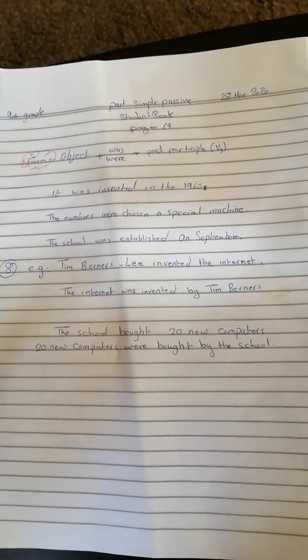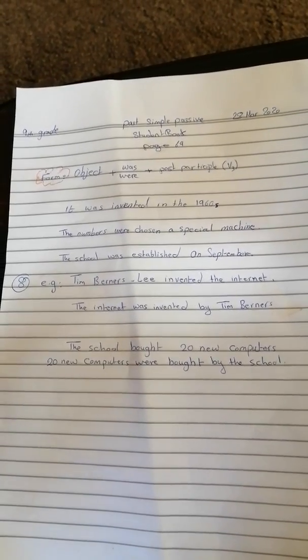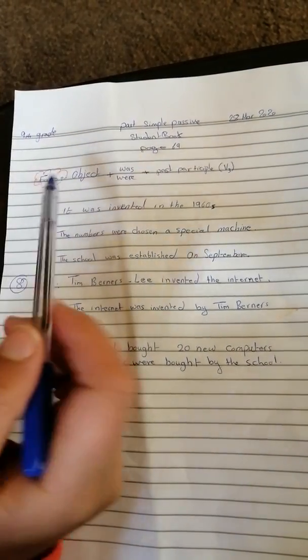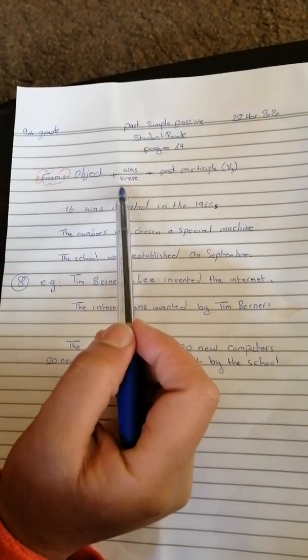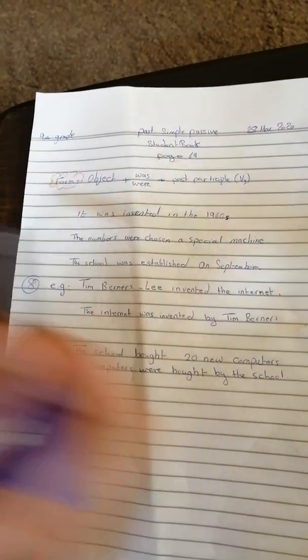Good time, 9th grade. Today we will discuss the passive of past simple. As you see, this is the form: object with was or were, then you have to put past participle, which is verb 3. Look at these examples.